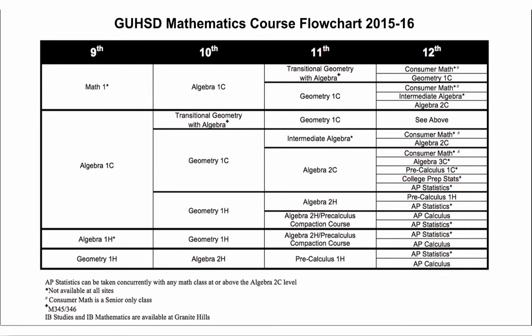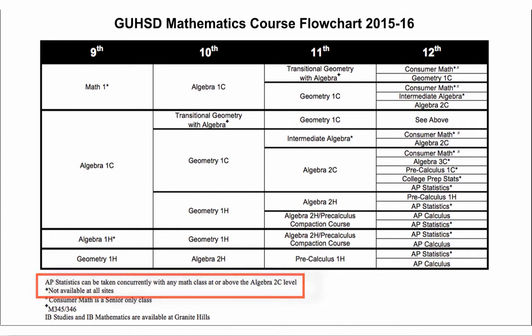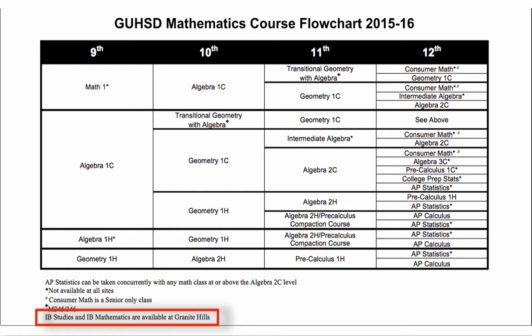At the bottom of this flowchart, note that Advanced Placement Statistics can be taken concurrently with any math class at or above the Algebra 2c level — many students enjoy taking it simultaneously as an elective. There is also a footnote that not all courses are offered at all sites, as course offerings depend on student needs at each local high school. Consumer Math is available to seniors only. The International Baccalaureate program, including IB Studies and IB Mathematics, is available uniquely at Granite Hills High School — contact them for more information.